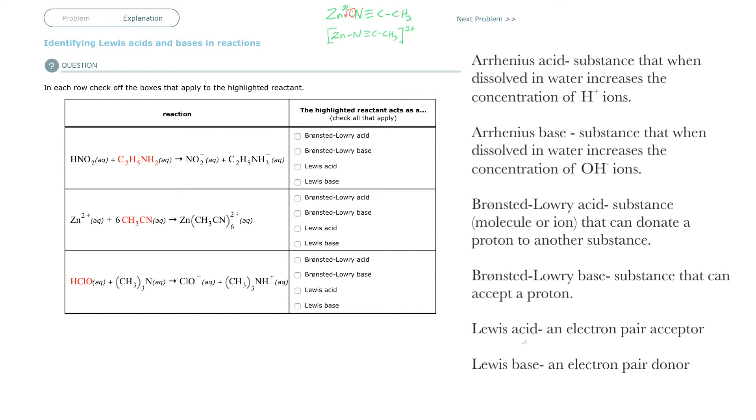Bronsted-Lowry expanded that and said it doesn't need to be a hydroxide. It just needs to receive a proton. When you get to Lewis, and you've seen Lewis in the Lewis dot structures that we've done, where you put dots on things and find where their valence electrons are, it's even broader still. It's not just whether it's donating or receiving a hydrogen proton, but it is pairs of electrons that can then be used as bonds.